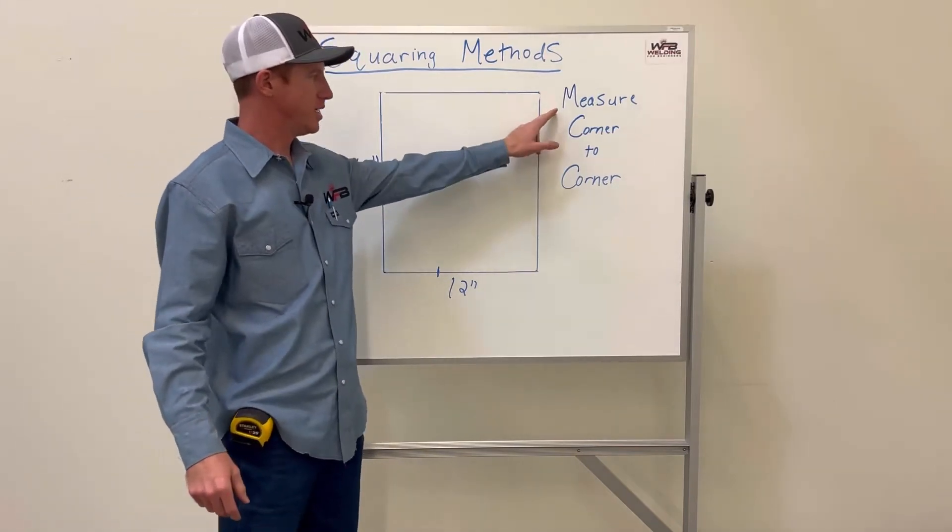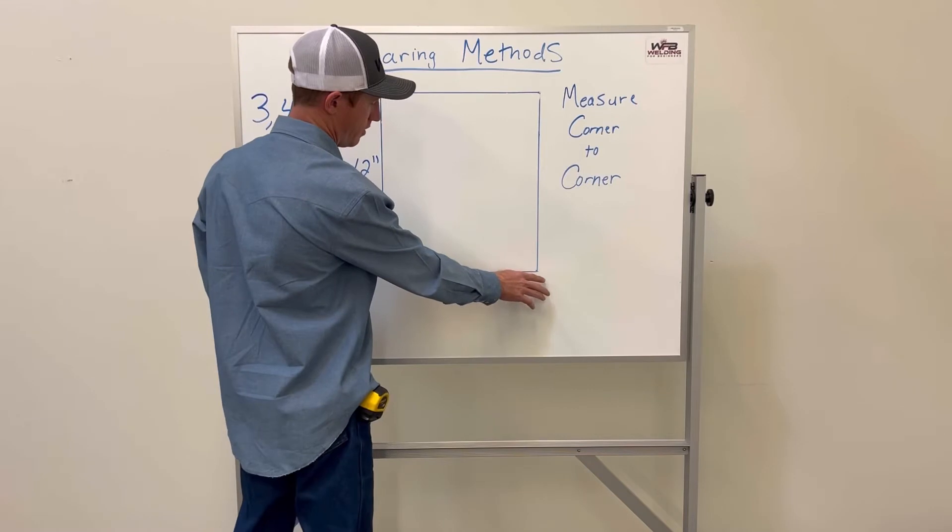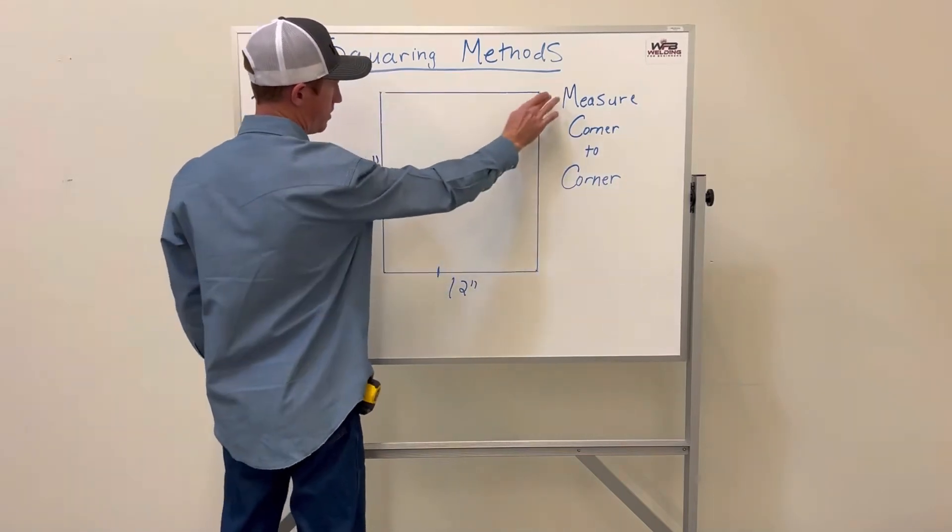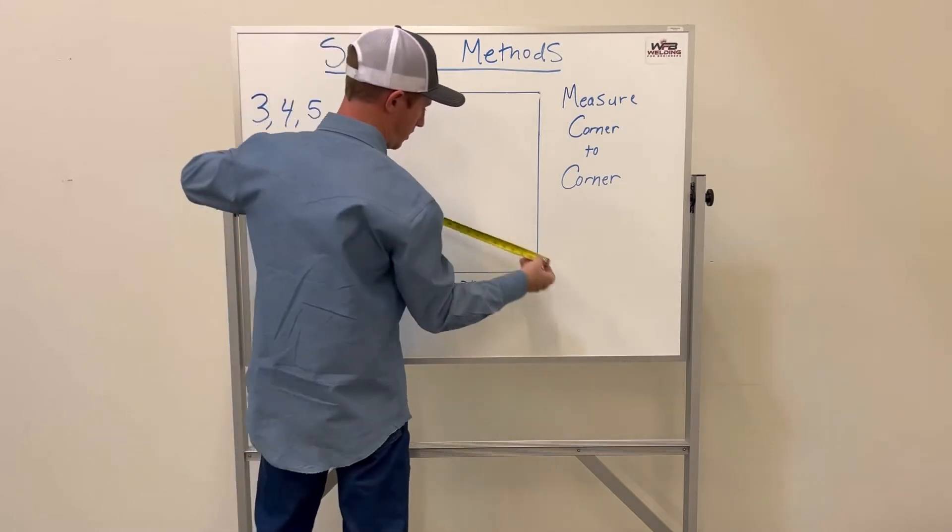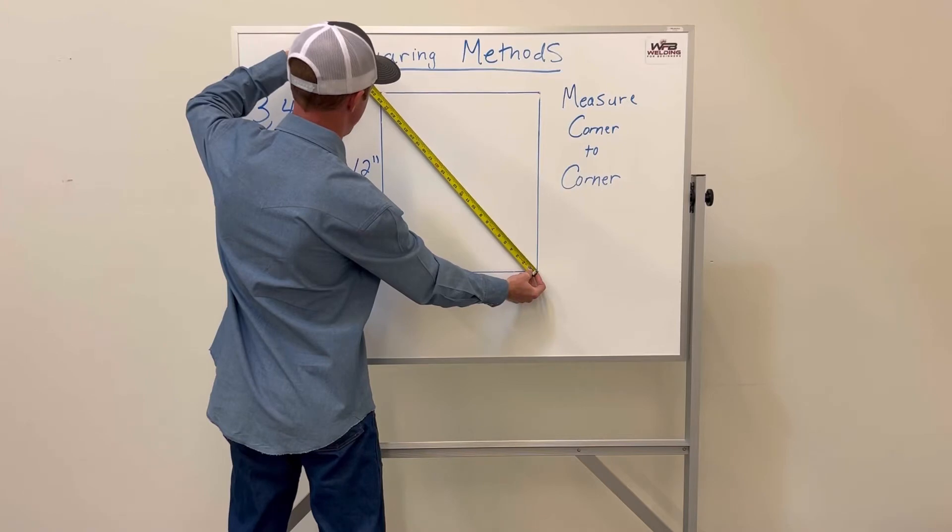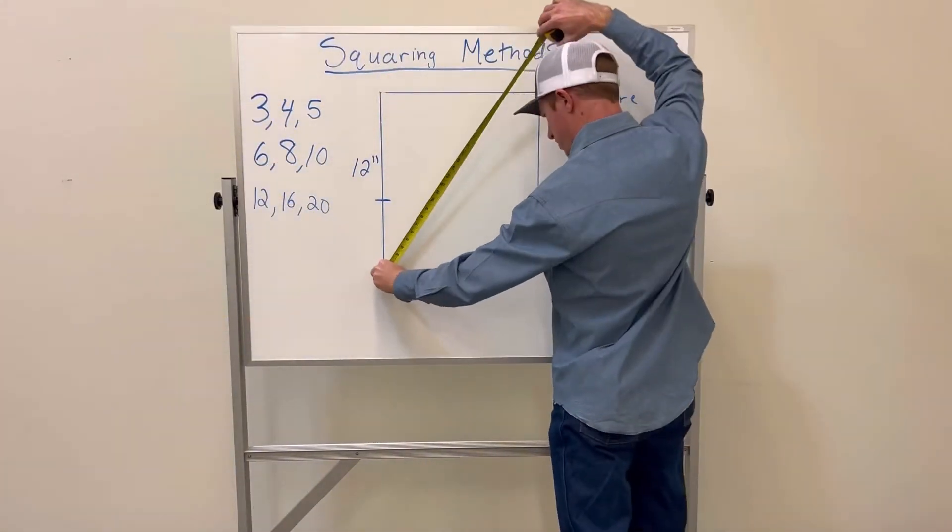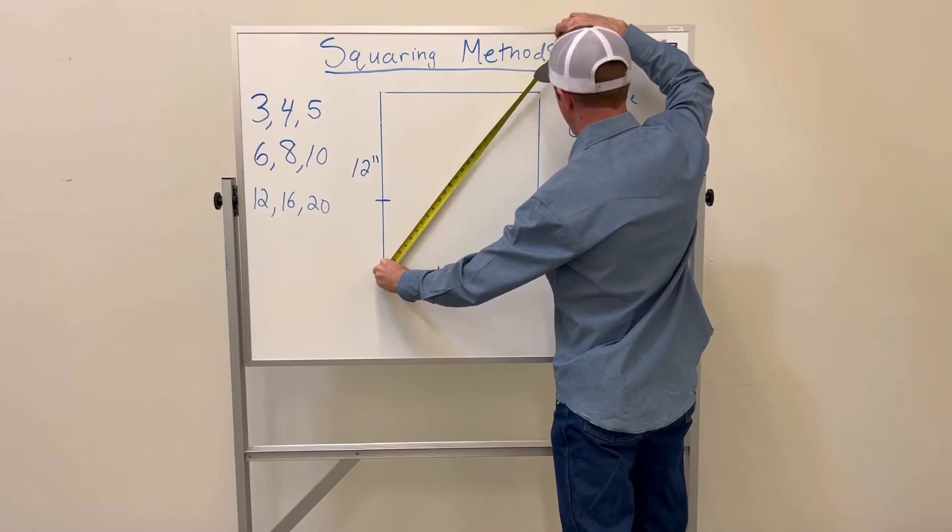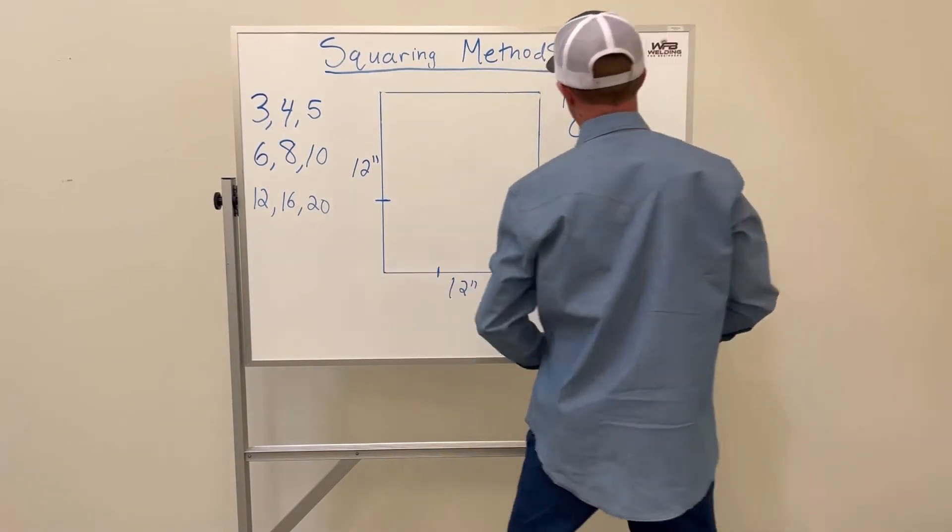The first is measuring corner to corner. Basically, the measurement from here to here needs to be the same measurement from here to here. In this case, we'll measure right there—it's 25 and 5/8 inches. We'll measure from this corner to the other corner, and that's 25 and 5/8 inches as well.